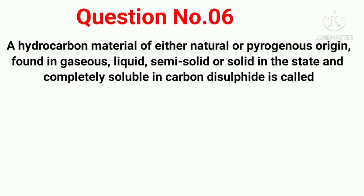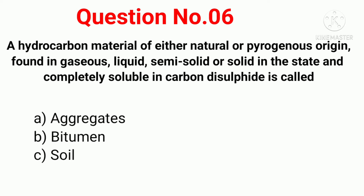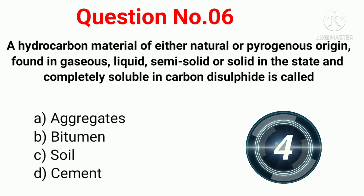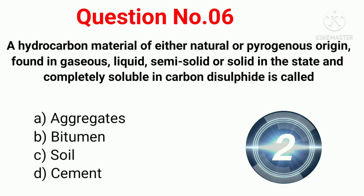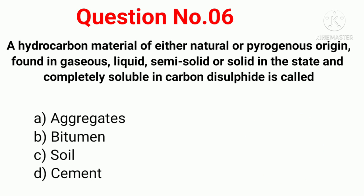Q6. A hydrocarbon material of either natural or pyrogeneous origin, found in gaseous, liquid, semi-solid, or solid state and completely soluble in carbon disulphide is called: Option A: Aggregate. Option B: Bitumen. Option C: Soil. Option D: Cement. Correct answer: Option B, Bitumen.